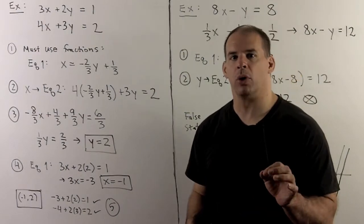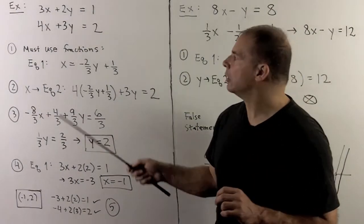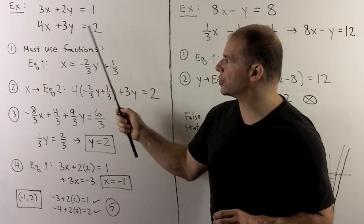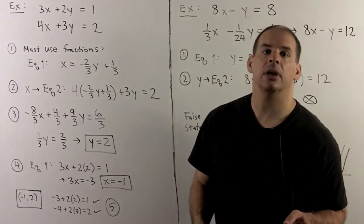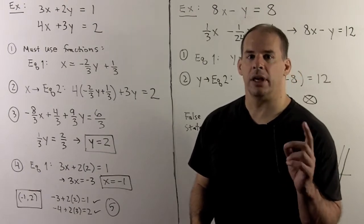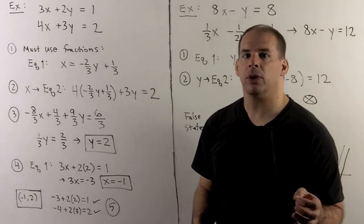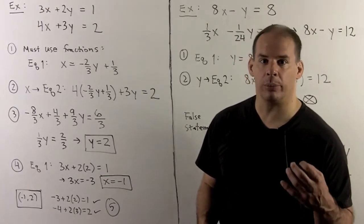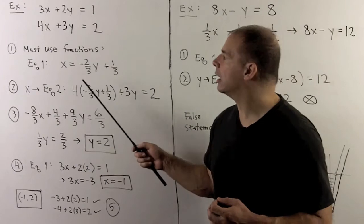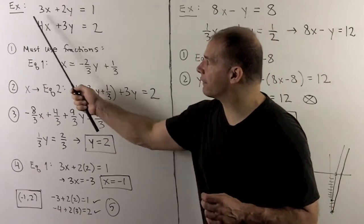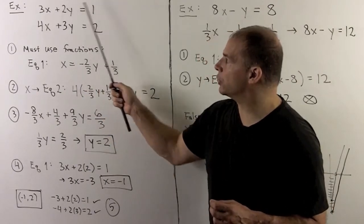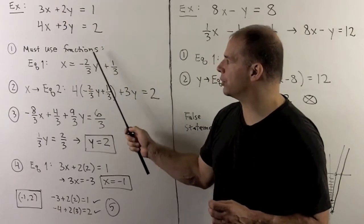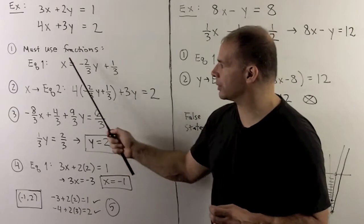Let's try an example where we can't avoid fractions. We have a system of linear equations, 3x + 2y = 1, 4x + 3y = 2. First step, if we try to isolate x or y in either equation, we get fractions. Not a problem. We just need to be careful with our bookkeeping. I'll isolate x in the first equation. I move the 2y to the other side as a minus 2y. Divide through by 3. So, we get -2/3 y + 1/3 = x.